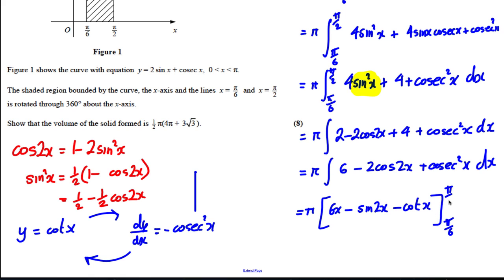Keep the pi where it is. Let's substitute in pi by 2. 6 times pi by 2 is 3 pi. Sine of pi is actually 0, so there'll be nothing there.